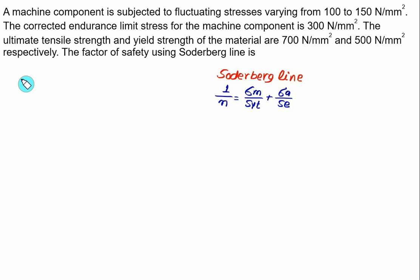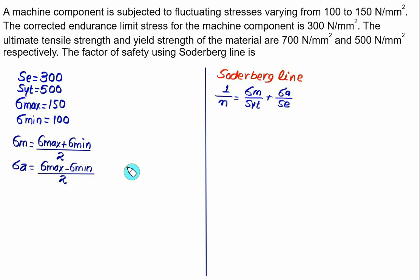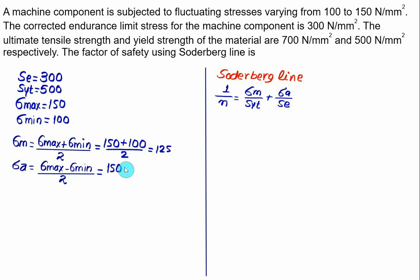The endurance strength SE is equal to 300 MPa. We require SYT, not SUT, which is equal to 500 MPa. Sigma max is 150 MPa and sigma minimum is 100 MPa. The mean stress equals sigma max plus sigma min divided by 2, that is 150 plus 100 equals 250 divided by 2, equal to 125 MPa. The amplitude stress is sigma max minus sigma min divided by 2, that is 150 minus 100 equals 50 divided by 2, equal to 25 MPa.